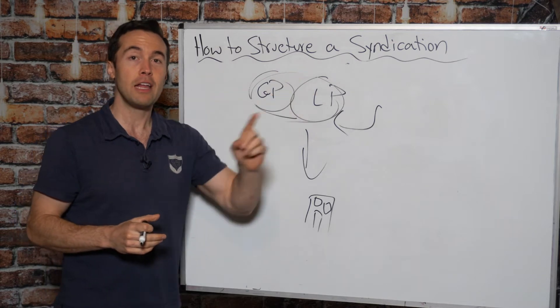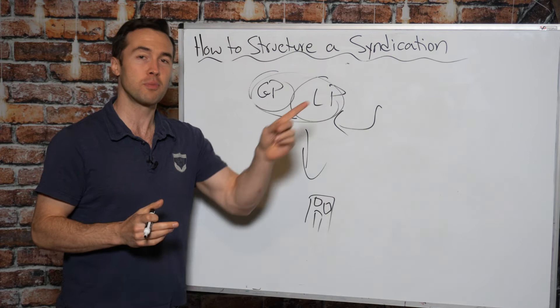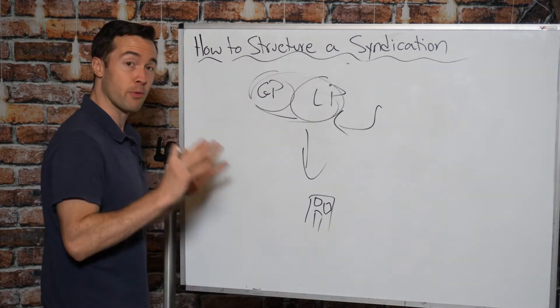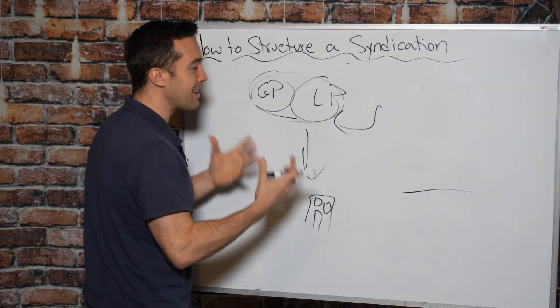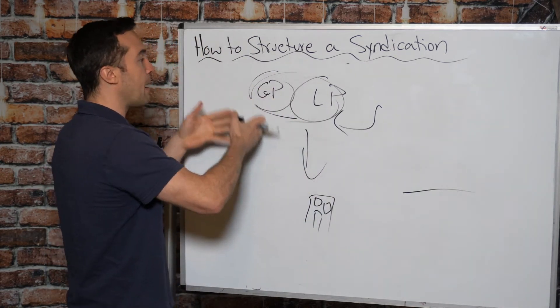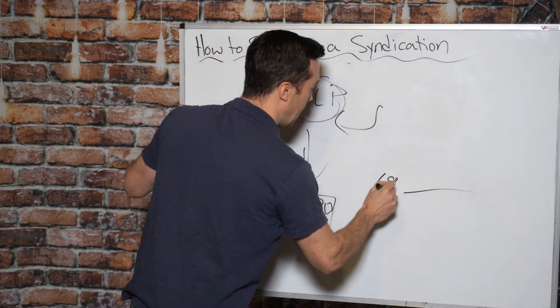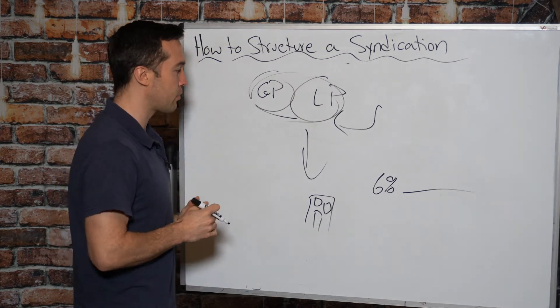Well, this is where preferred returns and waterfalls come into play. So I'll put a link right up here to a video I did explaining all about waterfalls. And I'll also put a link right up here to a video I did explaining preferred returns. A preferred return in a nutshell is basically a hurdle that the deal has to hit before the general partnership can participate in the profit. So let's say it's a six percent preferred return,